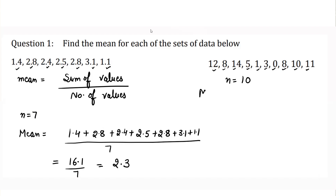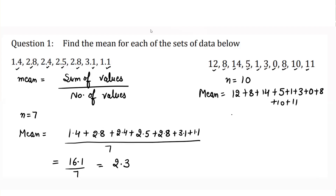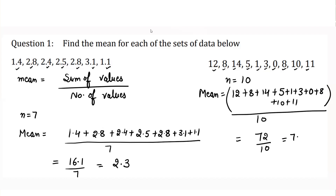We find the mean: 12 plus 8 plus 14 plus 5 plus 1 plus 3 plus 0 plus 8 plus 10 plus 11, divided by 10. When you add all these values together you get 72 over 10, which equals 7.2. So the mean for this set of data is 7.2.